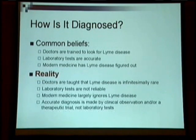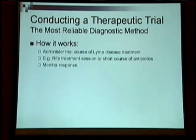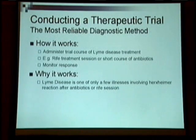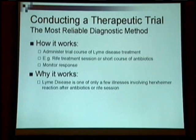An accurate diagnosis, in my opinion, is best made by clinical observation and a therapeutic trial. A therapeutic trial basically involves administering a trial course of Lyme disease treatment — for example, giving someone a Rife treatment or a short course of antibiotics — and monitoring their response. This works because Lyme disease is one of the few documented illnesses that involves a Herxheimer reaction after antibiotics or a Rife session. If someone has Lyme disease, there will be a very nasty reaction following the treatment. If they do not have that reaction, it is probably likely they may not have Lyme disease, or the bacteria may not be in a form susceptible to the treatment.